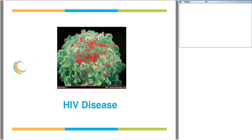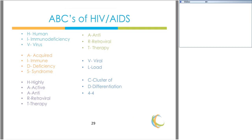Now we're going to talk about HIV itself — what exactly it is, how it reproduces in the body, and how it causes disease. First, let's learn the ABCs of HIV AIDS. HIV stands for Human Immunodeficiency Virus. AIDS stands for Acquired Immune Deficiency Syndrome, and we're going to discuss the differences between those two things.